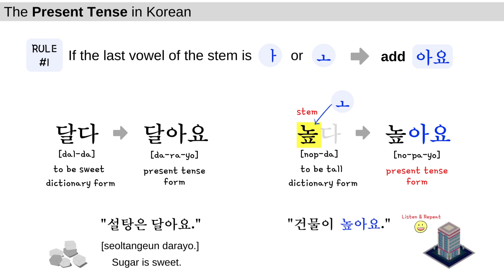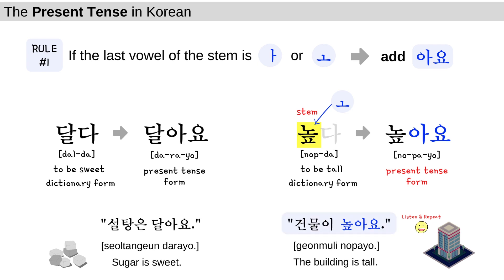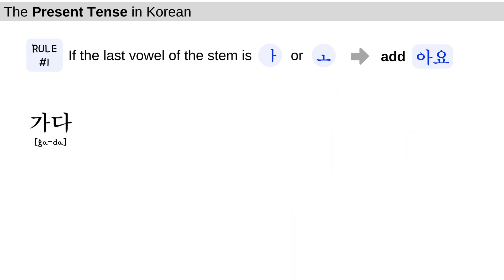높아요 is the present tense of 높다. Let's take a look at the sample sentence: 건물이 높아요 — The building is tall. 건물이 높아요.